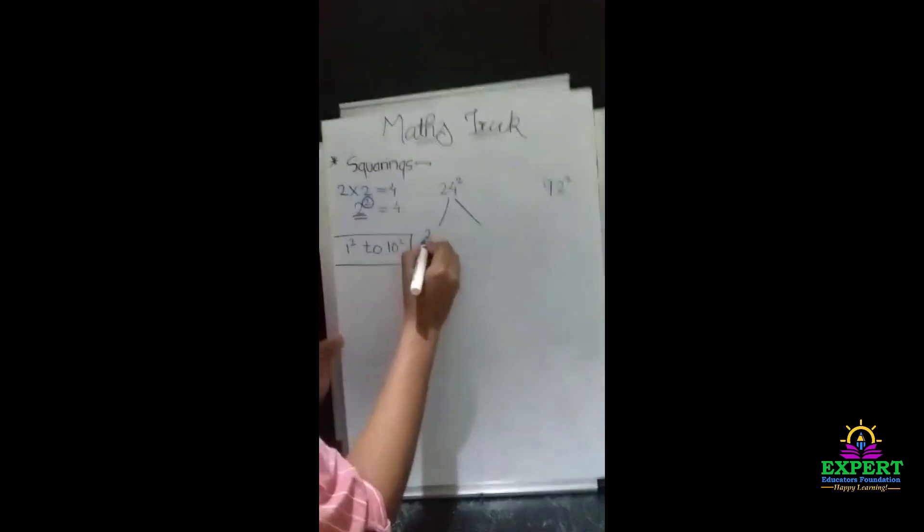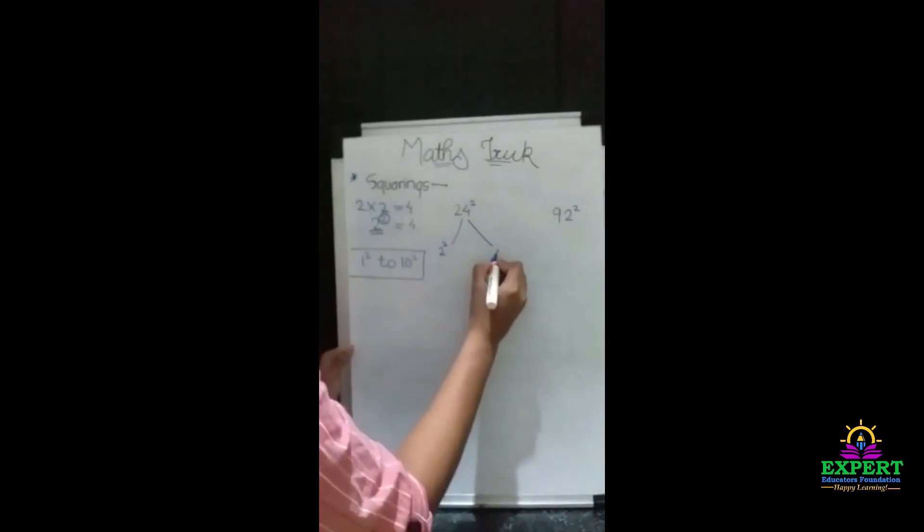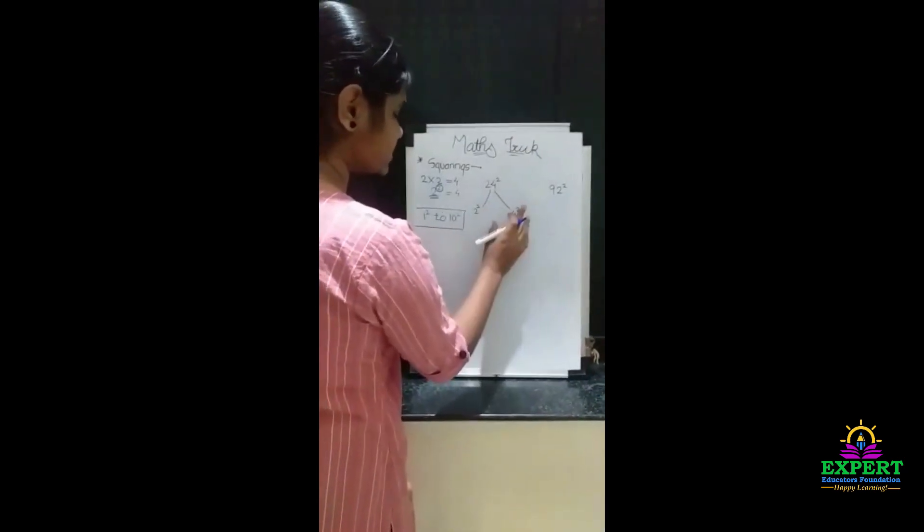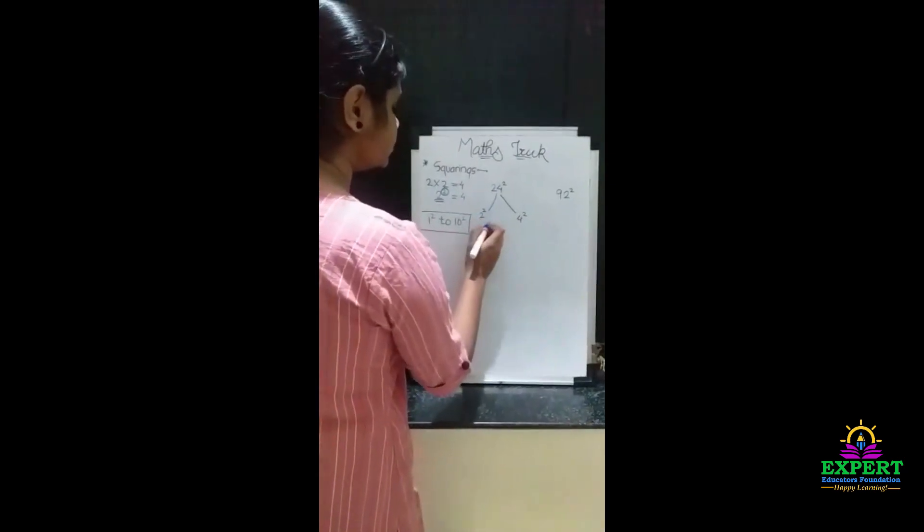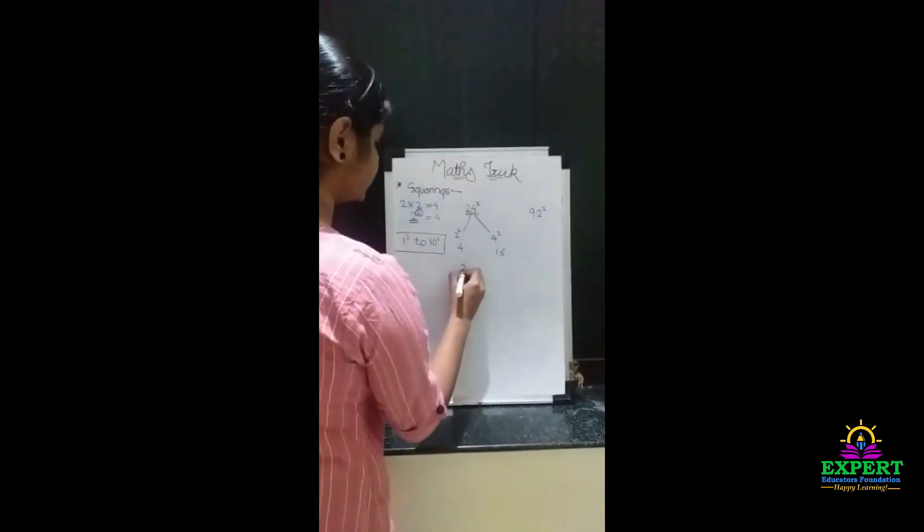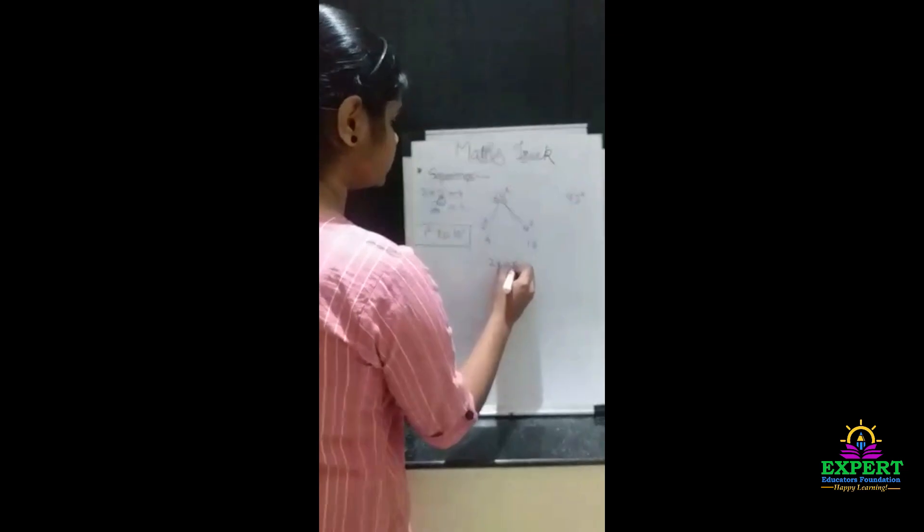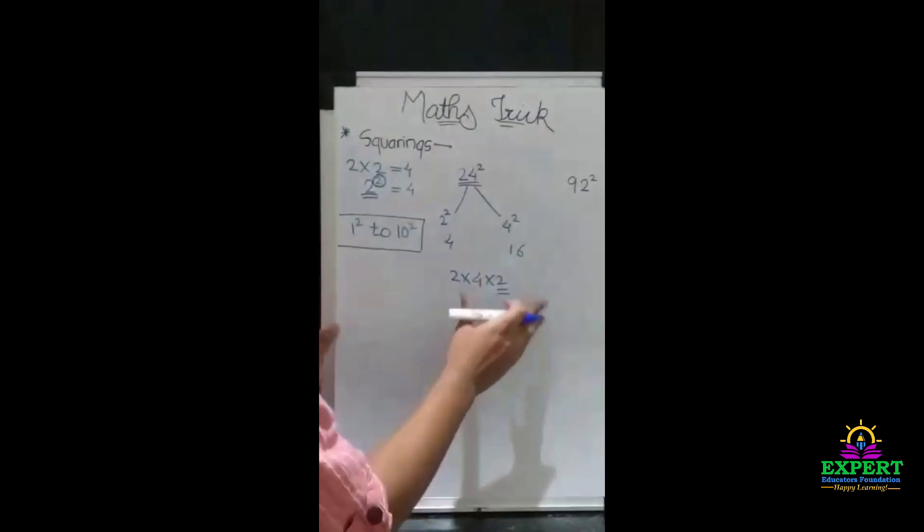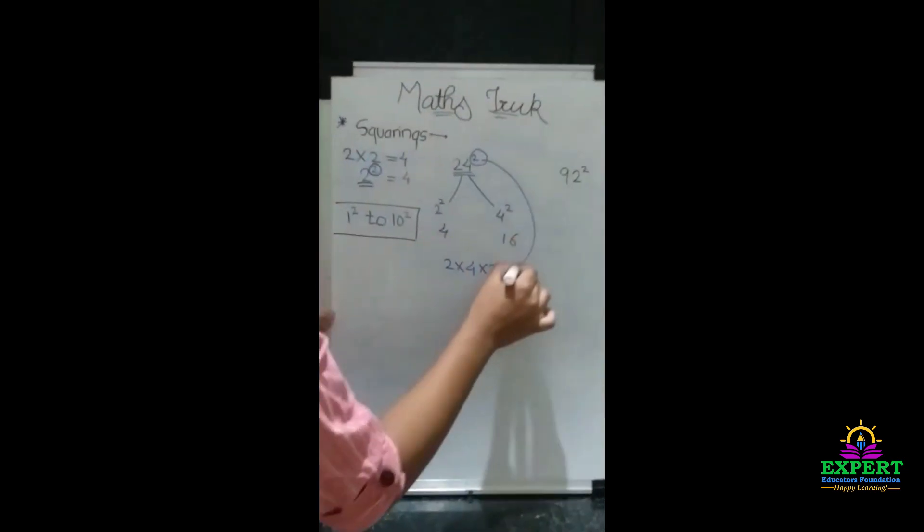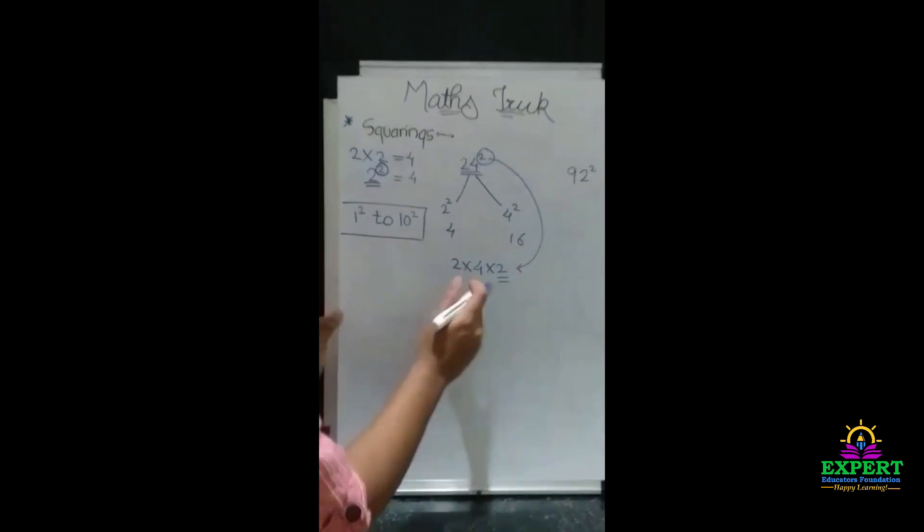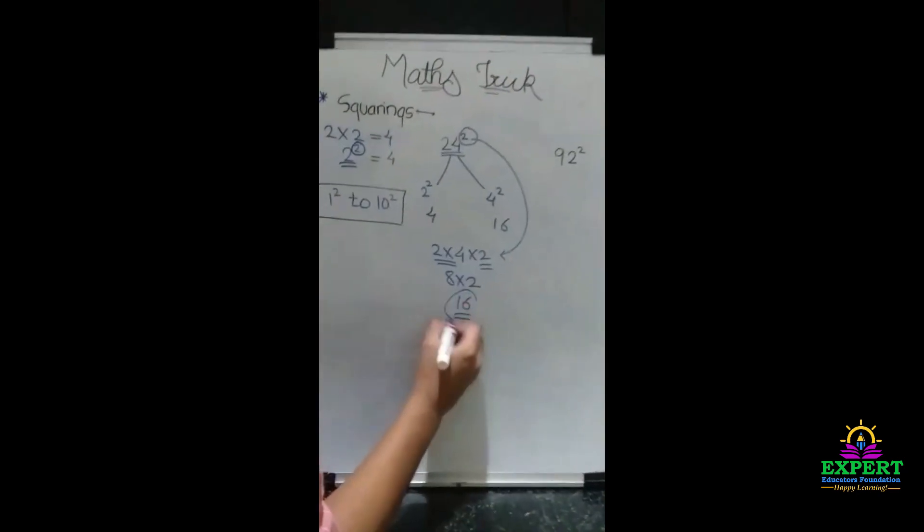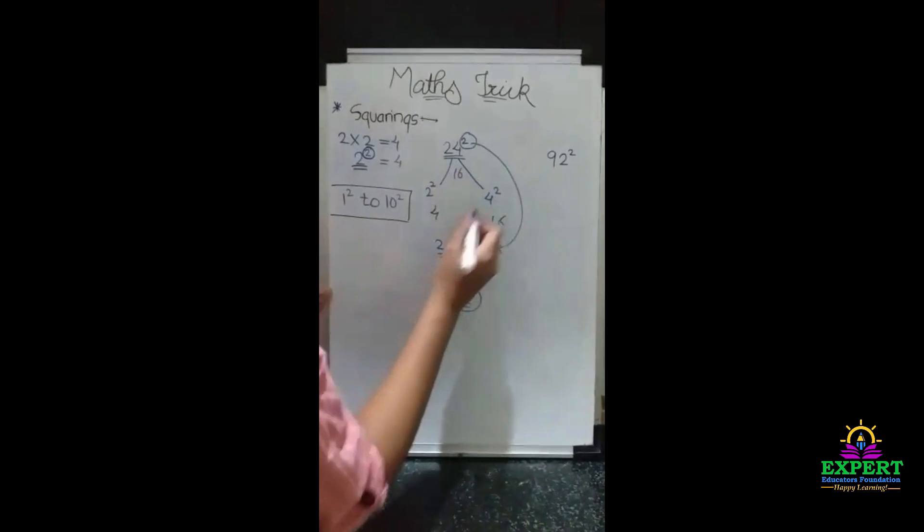24. Now see here, we will take 2 squared and here 4 squared. 2 and 4 are two separate numbers. Now 2 squared is 4, 4 squared is 16. Next step is to multiply these both numbers: 2 into 4 into 2. Now where did this 2 come from? Because we have squared, that's why this 2 came here. So now 4 times 2 is 8, and 8 times 2 is 16.